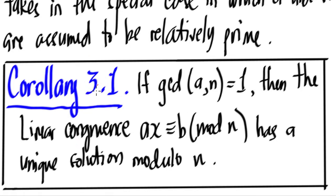Corollary 3.1: If gcd(a,n) = 1, that is to say they are relatively prime, then the linear congruence ax ≡ b (mod n) has a unique solution, meaning there's only one solution if their gcd is 1.